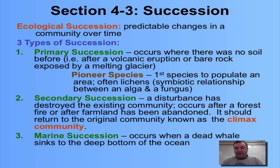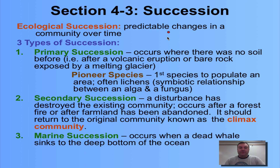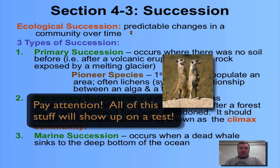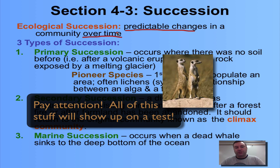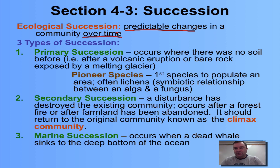This one deals with ecological succession, which is the predictable changes to a community over time. It typically happens after a disturbance — a disturbance is something that changes the ecosystem, often in a dramatic way.